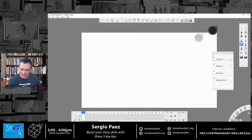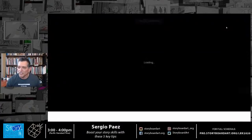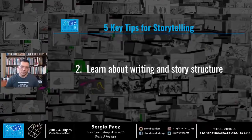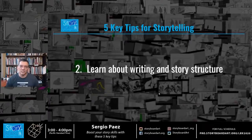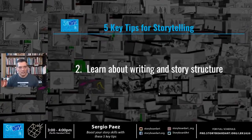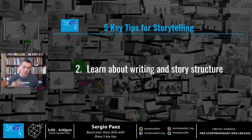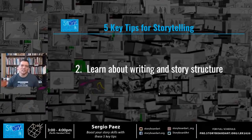Tip number two: learn about writing and story structure. This might be news to you if you're just getting into visual storytelling, because you might think it's just about drawing. But storytelling and sequential art is really about the way you structure your images one after the other — that becomes the story structure.